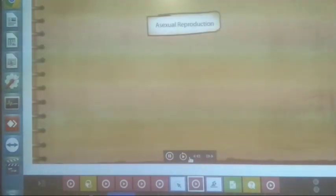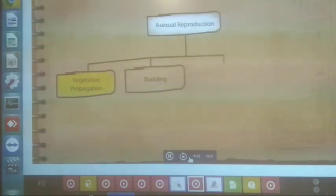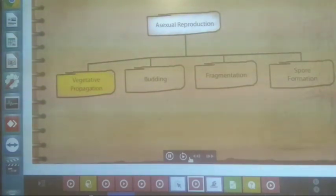Asexual reproduction involves a single parent and results in an offspring that is identical to the parent. Because asexual reproduction does not involve fertilization or the production of seeds, it is much faster and requires less energy and so ensures the survival of the species even when conditions are harsh. Asexual reproduction in plants may occur either by vegetative propagation, budding, fragmentation or spore formation. Here we will cover budding, fragmentation and spore formation.